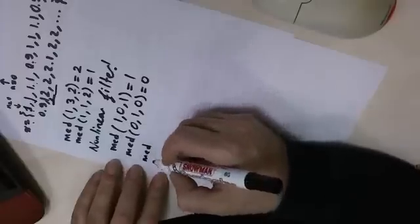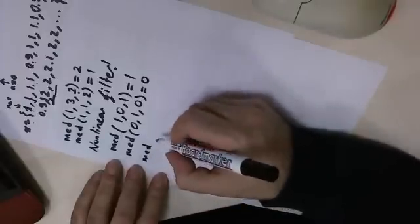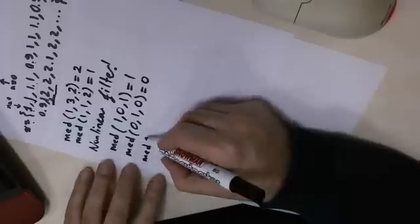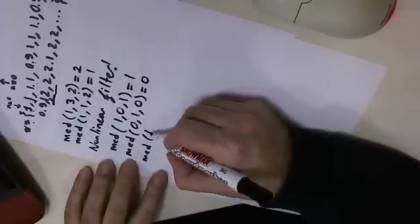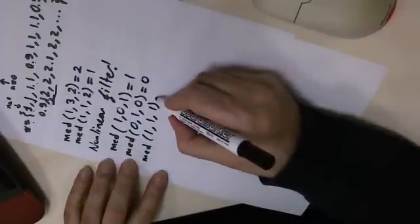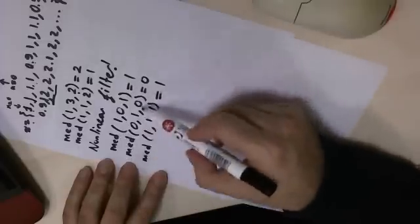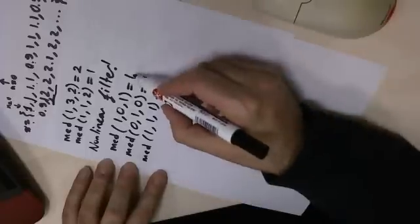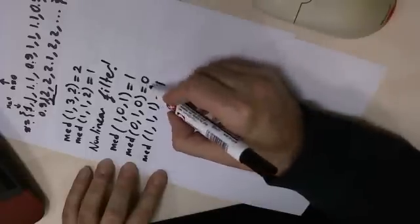Now the median of 1, 1, 1 is 1. So by just looking at a single example, you shouldn't judge if it is a linear filter or not — you see 1 plus 0 is 1.